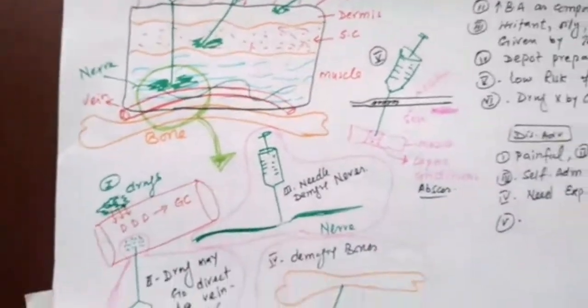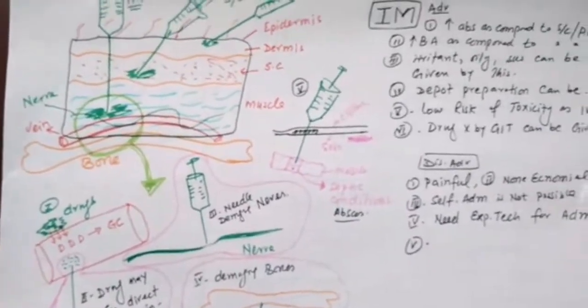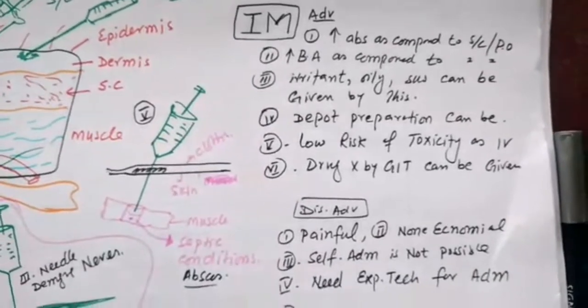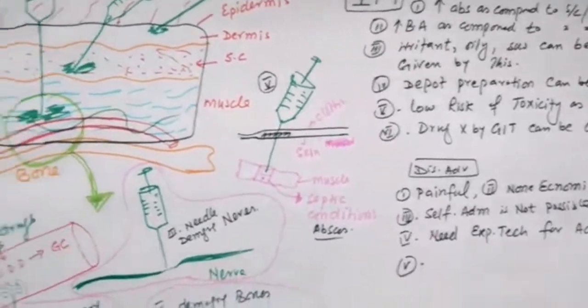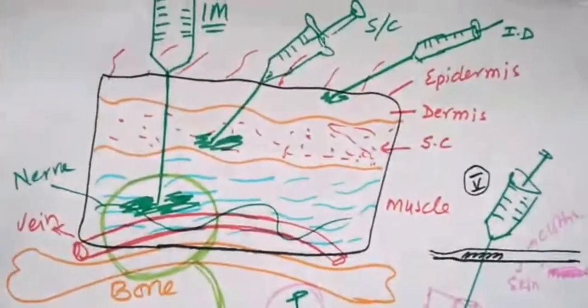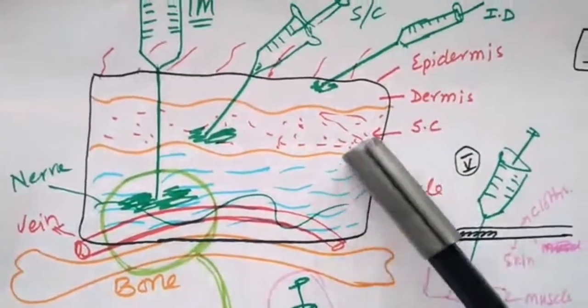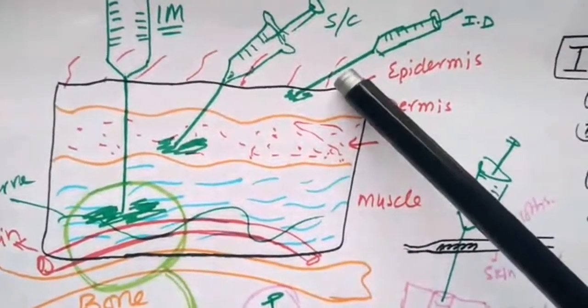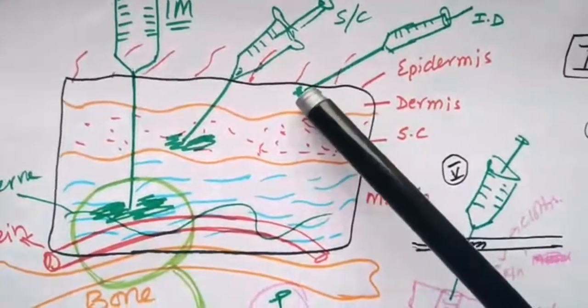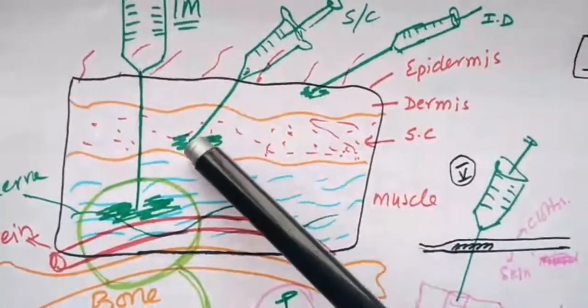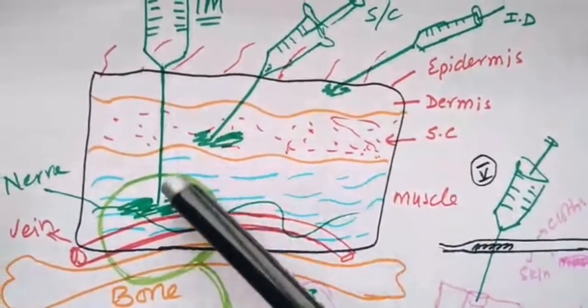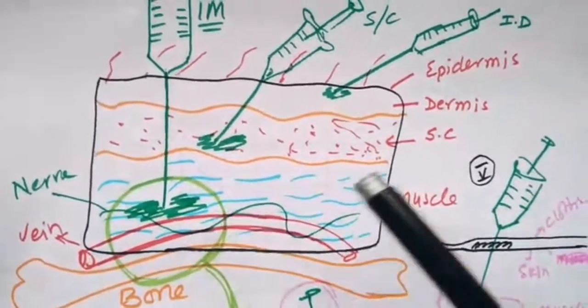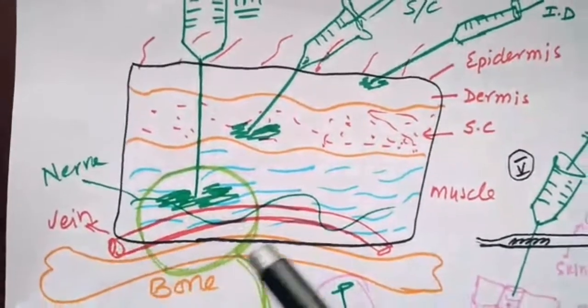The second type of parenteral administration is intramuscular route. We inject the drug in the muscle. Consider this diagram: this is the epidermis, this is the dermis where we inject subcutaneous drugs, and this is the muscular layer where we inject IM drugs. Nerves and blood vessels may be present here.